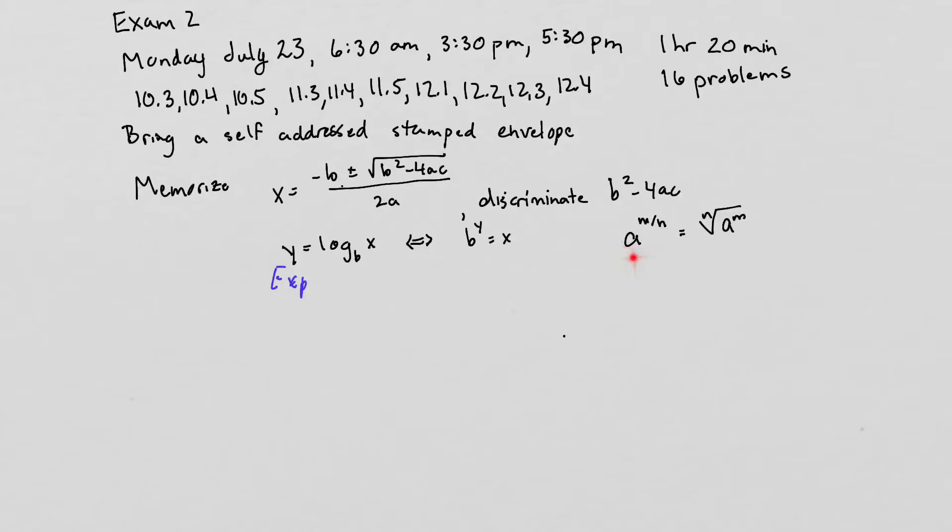You'll also need this formula that you've used in earlier sections. A to the m over n means the nth root of a to the m. And you'll need that formula for some of your logarithm problems.